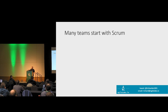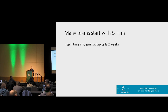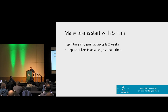A lot of teams start with Scrum. It's very neatly packaged. If a team wants to switch towards being Agile, Scrum is an easy place to start — there's the Scrum guide, it's a prescriptive framework. You split your time into sprints, typically about two weeks. In that sprint, you do a bunch of tickets that you prepare in advance — sometimes called grooming or planning. You normally estimate them to figure out how much is a reasonable amount of work to fit into the two weeks.